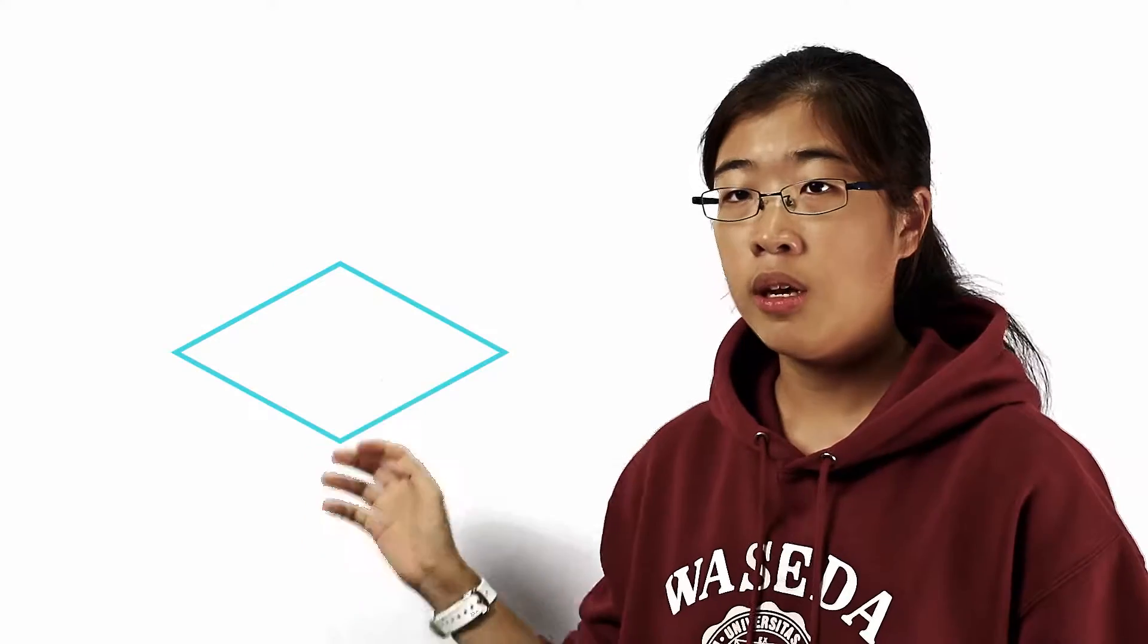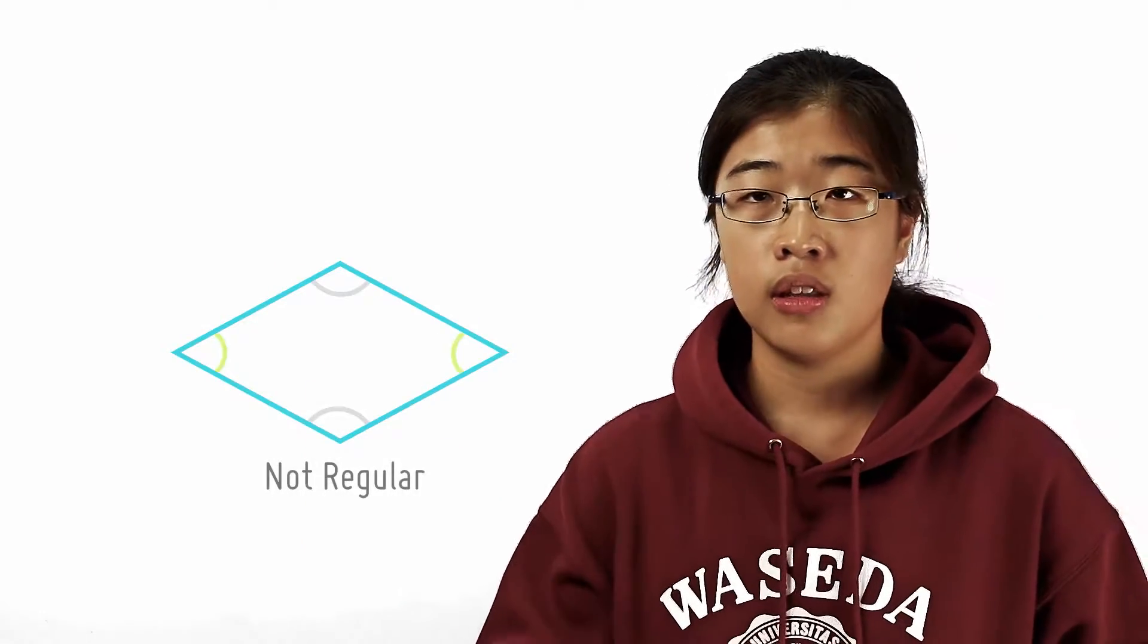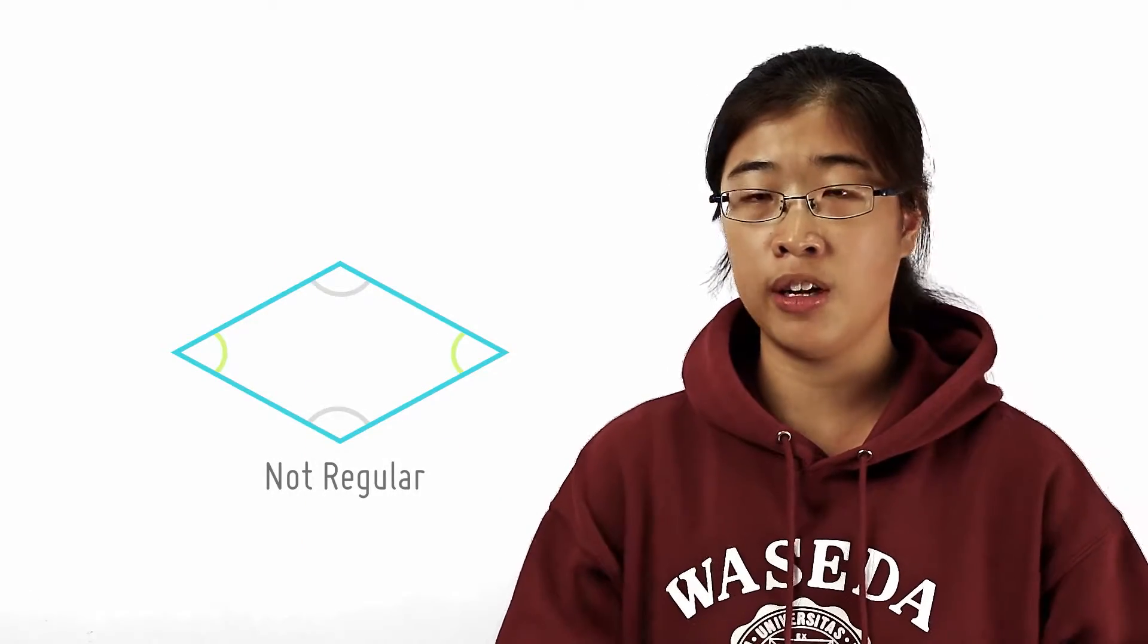Take for example a rhombus, it has 4 equal sides but not 4 equal angles, thus it is not a regular quadrilateral.